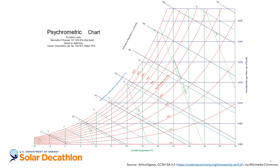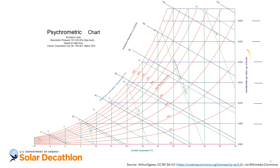Now back to the chart. There are a few key terms we need to define. First is the dry bulb temperature, shown horizontally on the x-axis and indicated by vertical green lines. Dry bulb temperature refers to the ambient air temperature without any influence of moisture or wind speed. This is the temperature measurement done by most thermometers and thermostats.